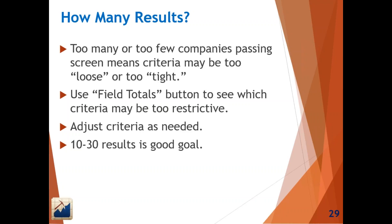With too many companies — say 60 or 70 — you start cherry-picking familiar names and ignoring companies you haven't heard of. With nine or ten companies, you or your club could quickly do SSGs and research to identify reasonable candidates.